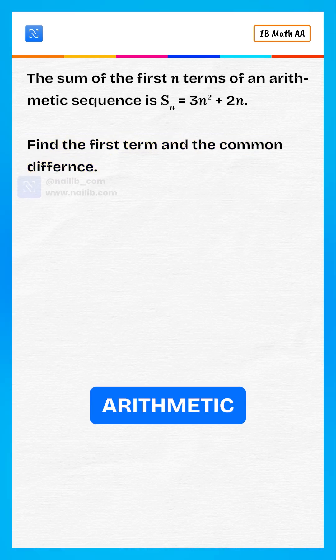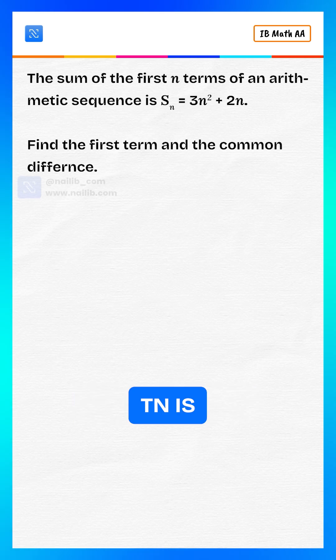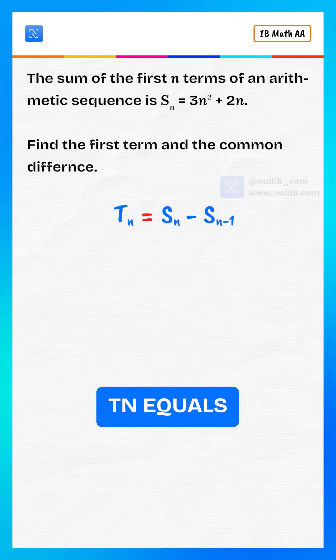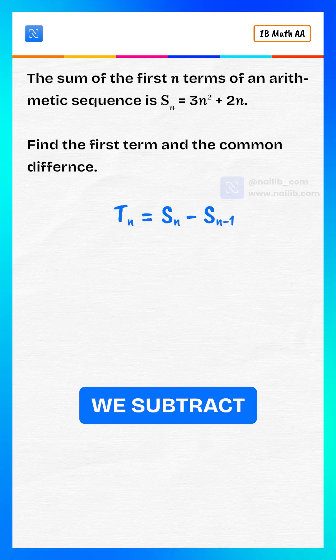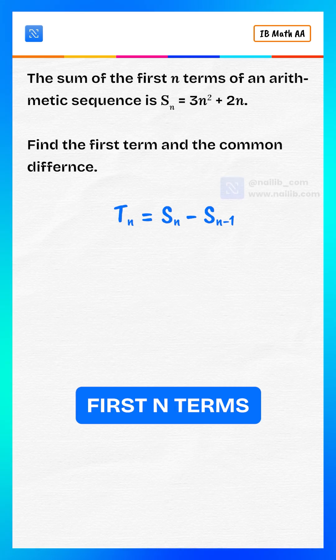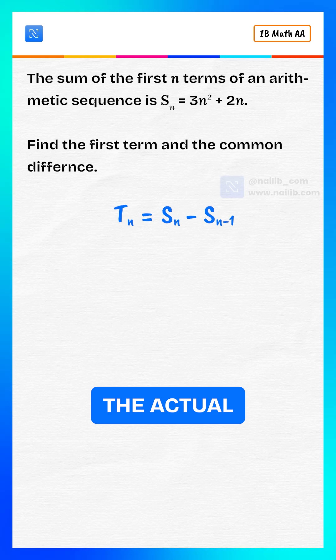In any arithmetic sequence, the nth term Tn is found using the relationship Tn equals Sn minus Sn minus 1. This means we subtract the sum of the first n minus 1 terms from the sum of the first n terms to get the actual nth term.